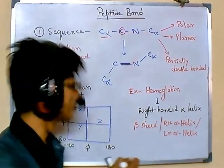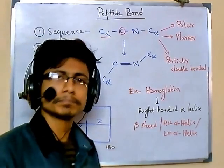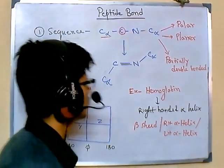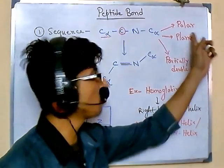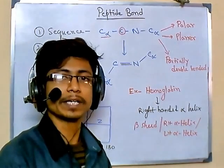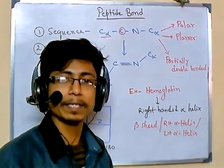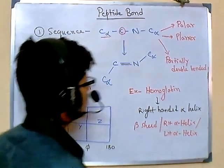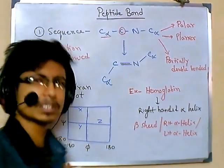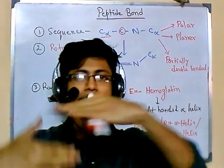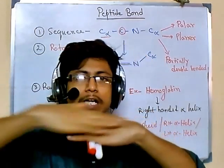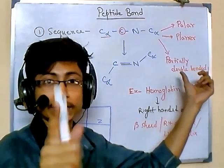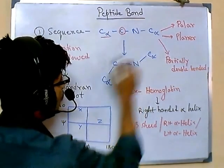From this arrangement we can identify important properties of peptide bonds. First, they are polar in nature, meaning they have both hydrophilic and hydrophobic character — hydrophobic means going away from water, hydrophilic means tending to remain in aqueous solution. Second, the structure is planar — all atoms, including carbon and nitrogen, lie in the same plane. Third, they are partially double-bonded in nature.